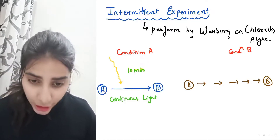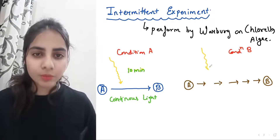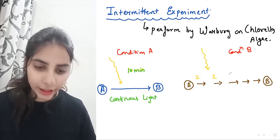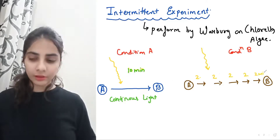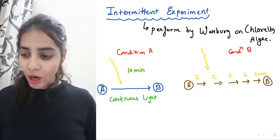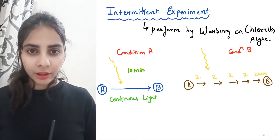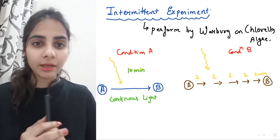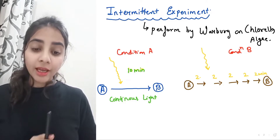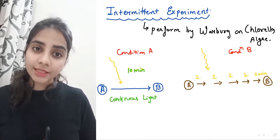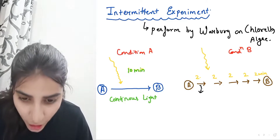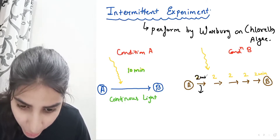In Condition B, we still give a total of 10 minutes of light, but in intervals. For example, 2 minutes of light, then a gap, then again 2 minutes, then again 2 minutes — so 10 minutes of light is given but in 2-minute intervals. Now what do we expect? Where will we get more glucose — in Condition A or in Condition B? We observe that in Condition B, more glucose is obtained. Why is this?